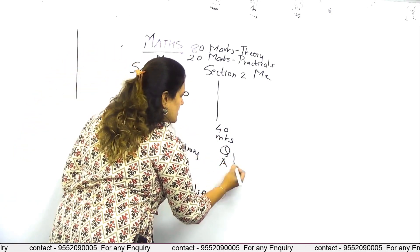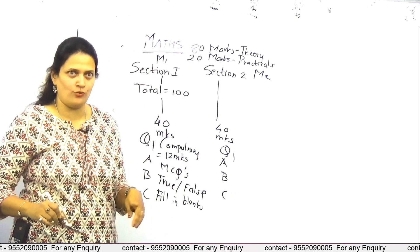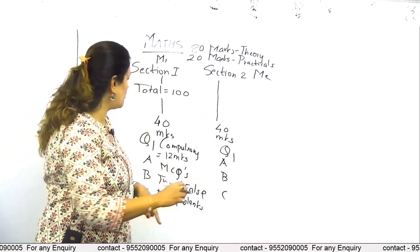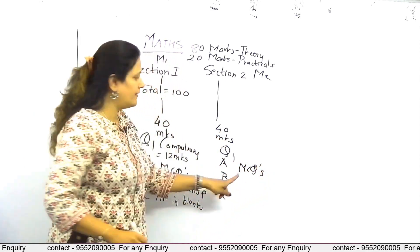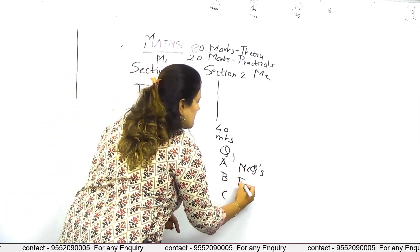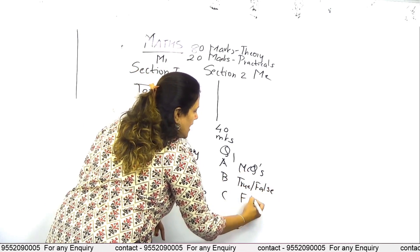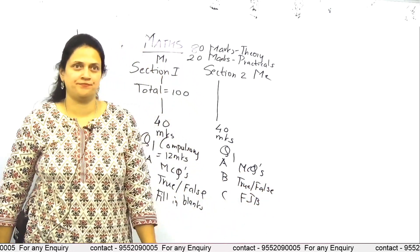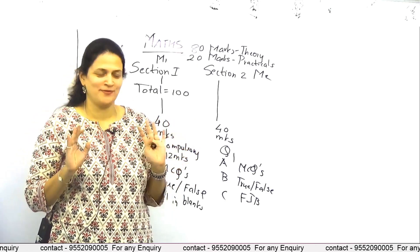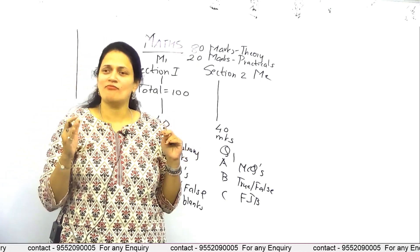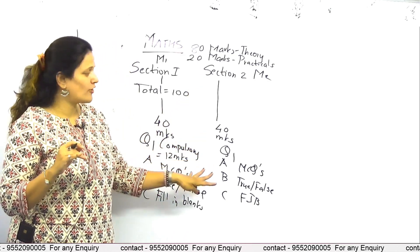The same applies for M2 as well — question 1 is going to be compulsory and 12 marks will be allotted to it. It will comprise objective type questions: MCQs, true or false, and fill in the blanks. Remember to complete this question as it is going to help you achieve amazing marks.